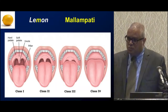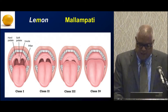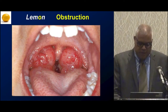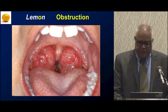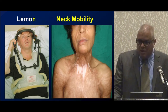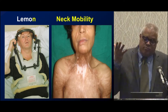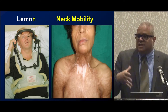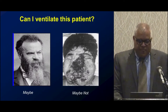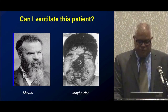Mallampati class also predicts intubation difficulty and is worth memorizing: classes one and two tend to be associated with easier intubations, whereas three and four are much more difficult. Look for airway obstruction—significant obstruction makes passing an endotracheal tube much harder. Neck mobility is often overlooked; a patient in a halo or with severe burns to the upper chest and neck may have a much less compliant anterior space. Patients with severe facial trauma may warrant going immediately to cricothyroidotomy or tracheostomy.